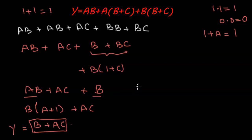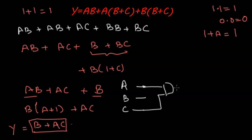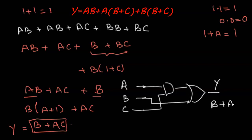After all simplification steps, the final output is b plus ac. We can see the number of gates has reduced to just two gates: one AND gate for a AND c, and one OR gate for b plus ac. This shows how Boolean simplification significantly reduces gate count.